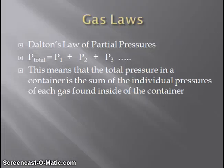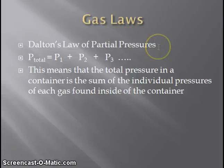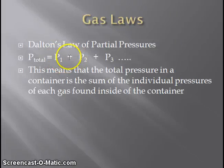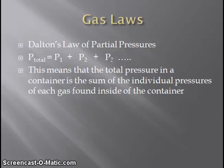The first gas law we'll discuss is Dalton's law of partial pressures, named for John Dalton of atomic theory fame. Dalton's law says that if we have a container with a number of gases inside, the total pressure is the sum of the individual pressures of each gas. For example, if gas one has one atmosphere, gas two has two atmospheres, and gas three has three atmospheres, the total pressure is one plus two plus three, equaling six atmospheres.